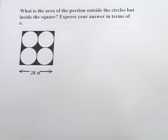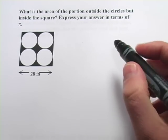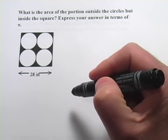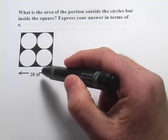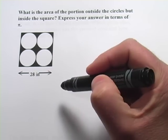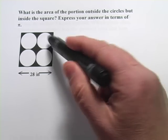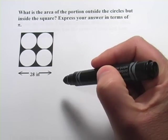Let's try one more. This is one of my favorite types of problems. They're asking, what is the area of the portion outside the circles but inside the square? So imagine you take a piece of paper here, a square piece of paper that's 28 inches on a side. You cut out those circles very carefully. And what's the area that you have left? The scraps.